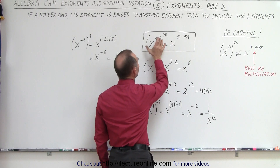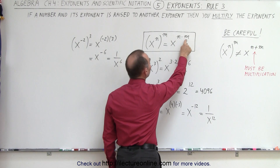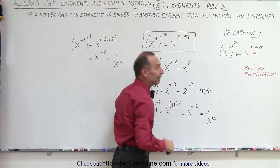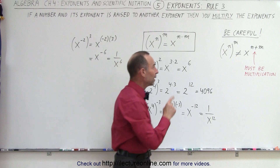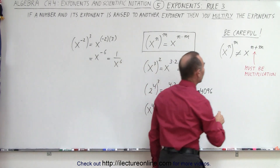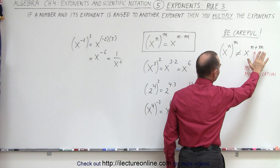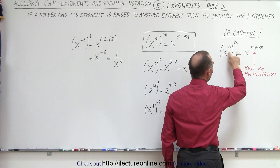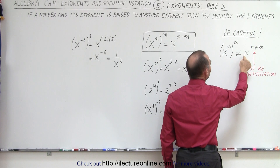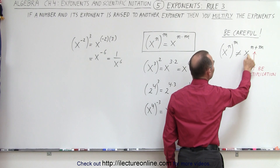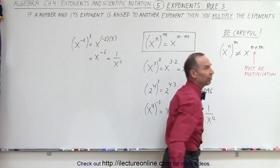So x to the n, the whole thing raised to the m power, is equal to x to the n times m. We need to point out where a common mistake is done — we have to be careful. Sometimes people will think that we have to add the exponents, but that's not the case. Here we have to multiply. So x to the n, all of it raised to the m power, is equal to x to the n times m, not plus m.